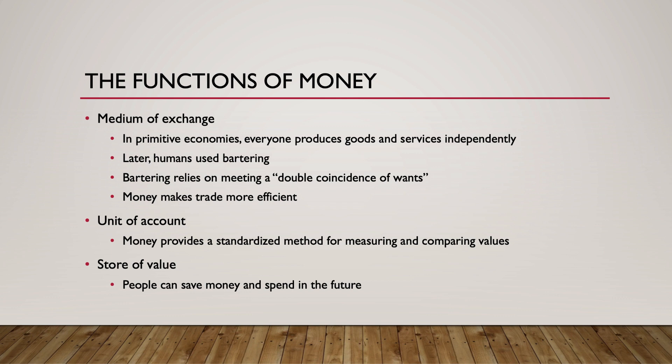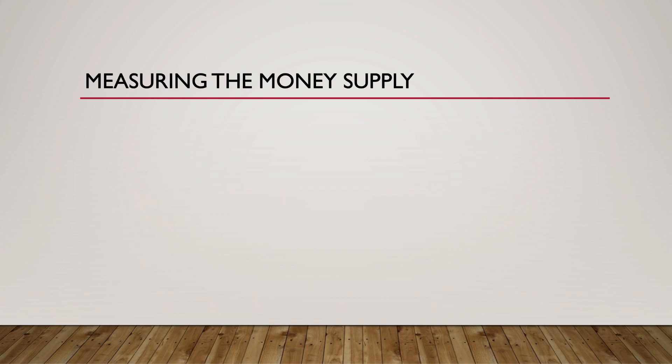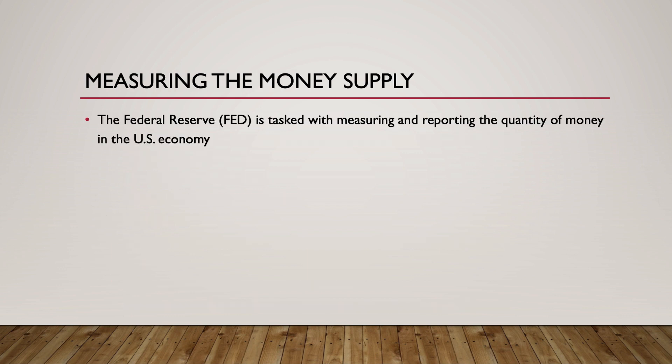But this depends on how liquid an asset is. An asset's liquidity determines how quickly, easily, and reliably an asset can be converted into cash. How much money is in the U.S. economy? The Federal Reserve is tasked with measuring and reporting our money supply. The Fed developed several different measurements of the money supply, indicated as M0, M1, M2, M3, and others.